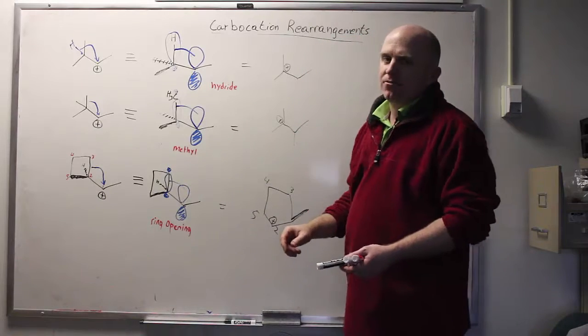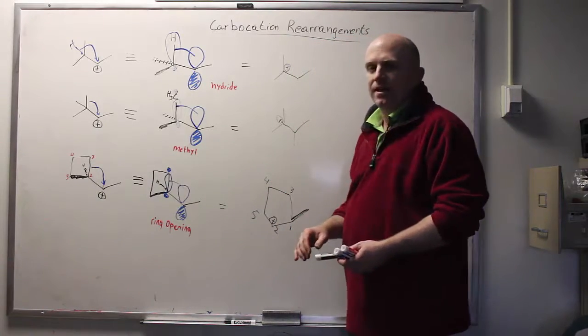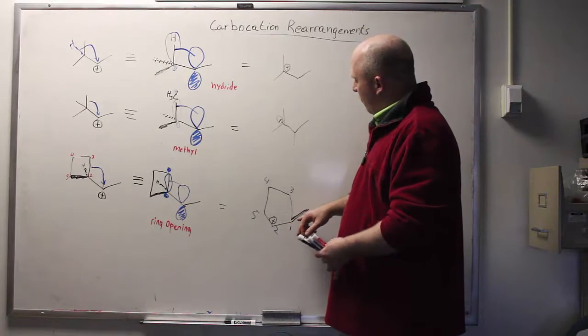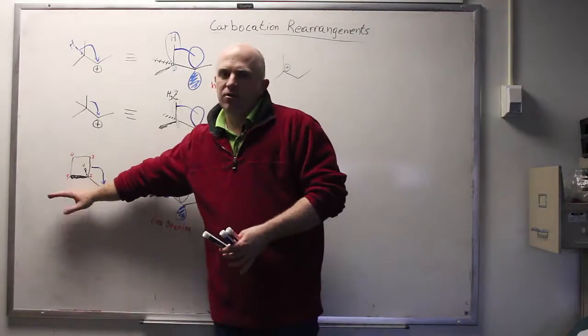The reason why this happens is to relieve strain. The cyclobutane is highly strained, the cyclopentane is not. So even though you go from a secondary to a secondary, this is still a lower energy secondary than you were to begin with.